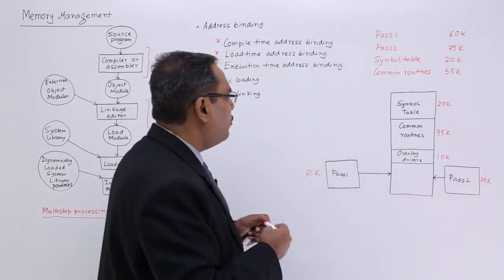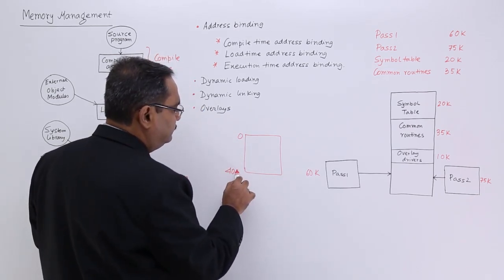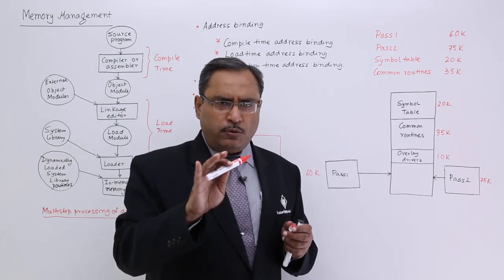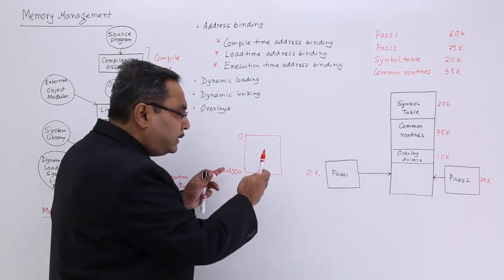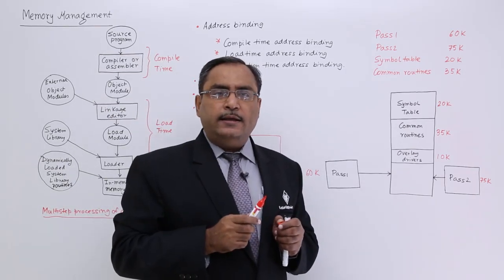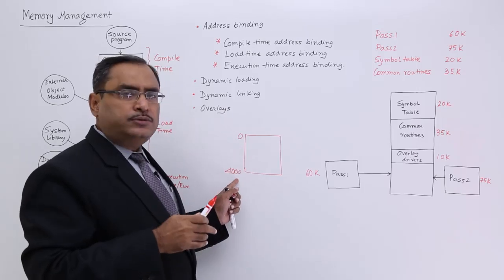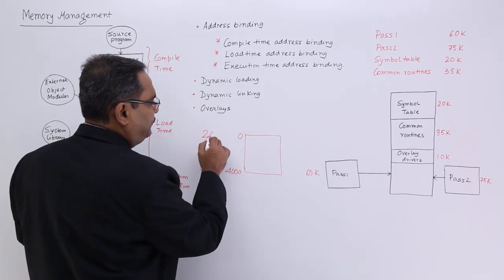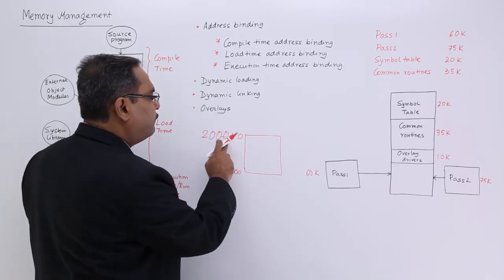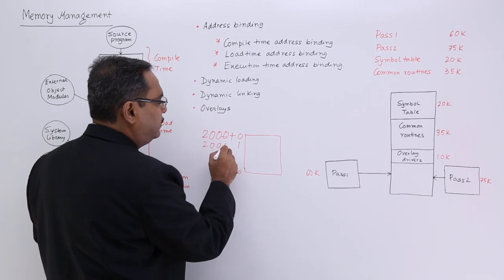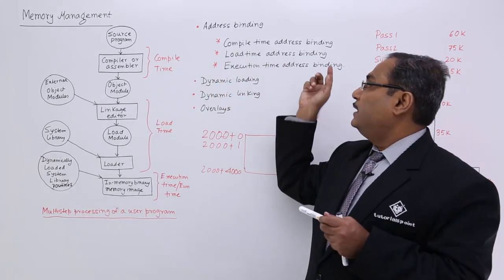When the program is getting compiled, it indicates the starting address will be 0 and the ending address will be 4000, since 4k is the size of the program. But when the program is getting loaded, the loader says: from location 2000 onwards, I have 10,000 bytes of memory space free and your size is 4000, so you can fit there — your starting address will be 2000. So the relocatable address plus the base address gives you the physical address: 0 becomes 2000, 1 becomes 2001, and 4000 becomes 6000. That is load time address binding.